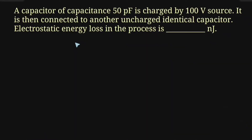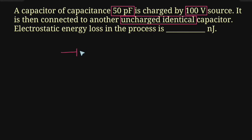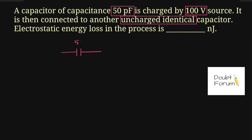Hello friends, welcome to Doubt Forum. This question is: a capacitor of capacitance 50 picofarad is charged by a 100 volt source. It is then connected to another uncharged identical capacitor. We have to find out the electrostatic energy loss in this process in terms of nano joule. There is a capacitor of value 50 picofarad connected across a voltage source of 100 volt.